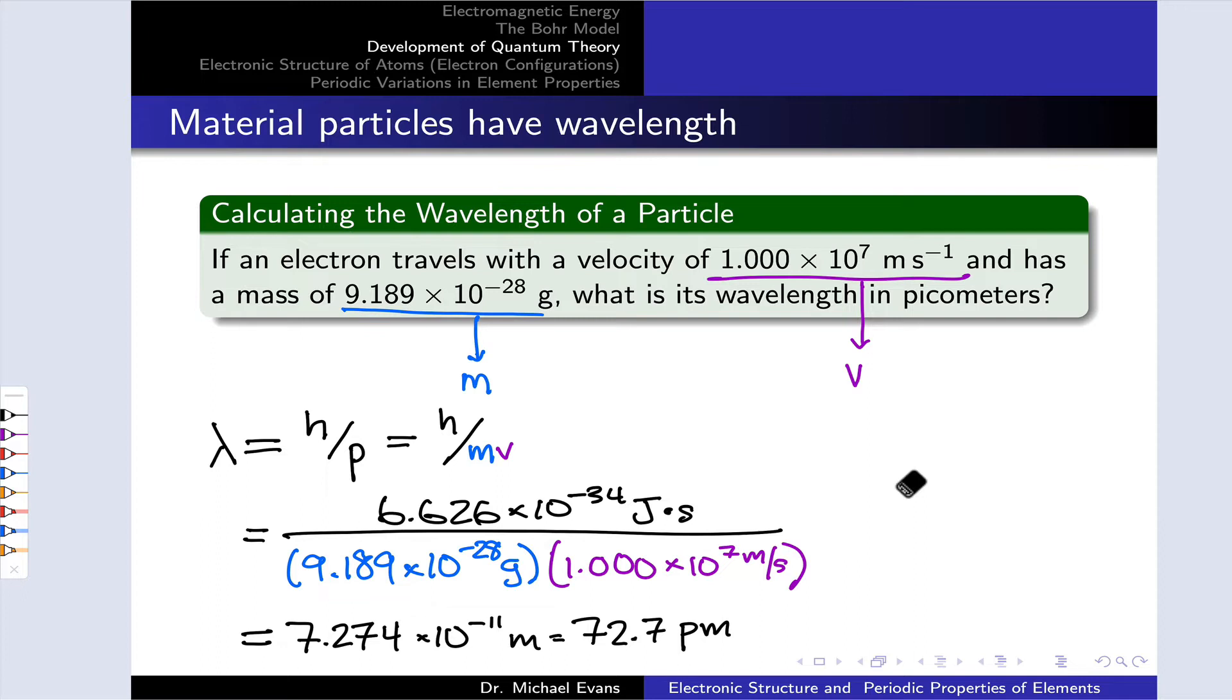Is this longer or shorter than what we think of as the diameter of an electron? The answer is, it's much longer. This is approaching an atomic radius, 72.7 picometers.